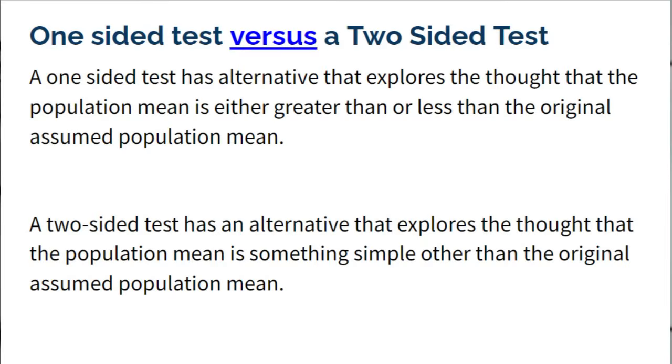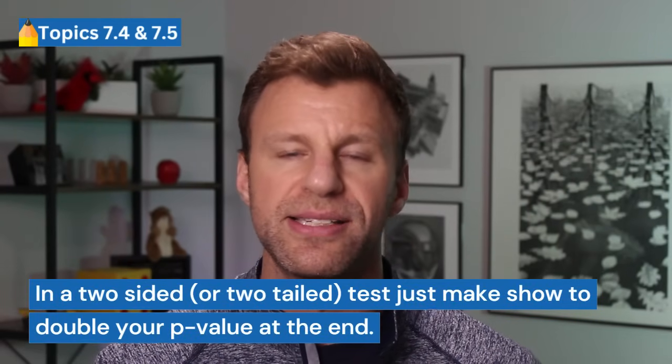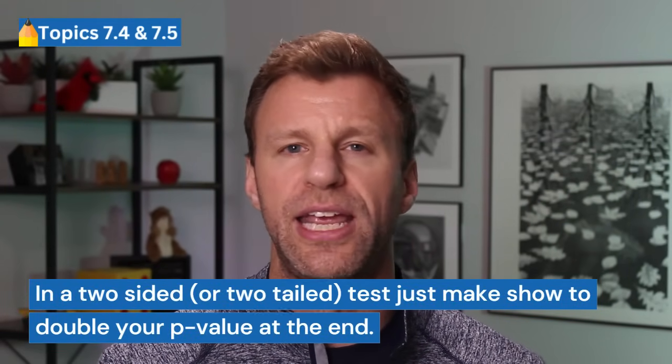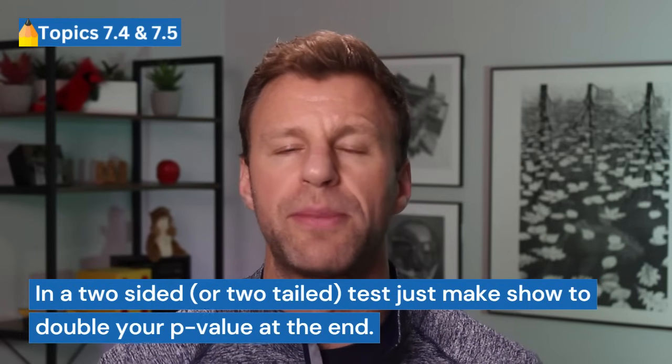We never use x-bar in our hypotheses — they are always about the population mean. If the alternative hypothesis is less than or greater than, these are one-sided tests (one-sided lower or one-sided upper). If we just care that the mean is different — not equal to — that's a two-tail test. The only difference in execution is that you double your p-value for a two-tail test. So when you get your p-value, multiply it by two when working with a two-sided test.